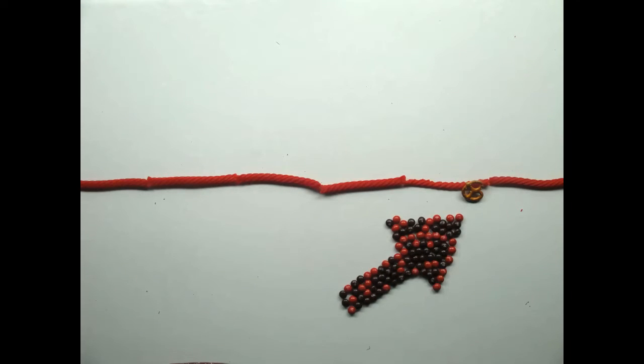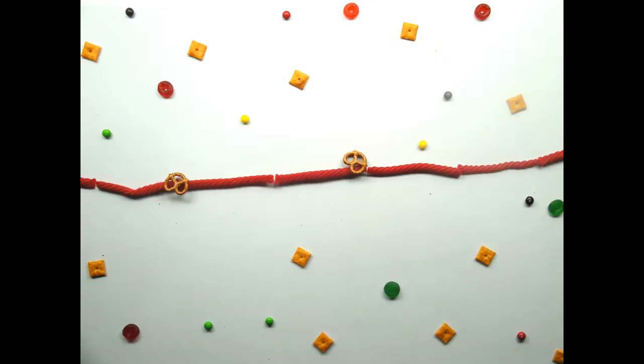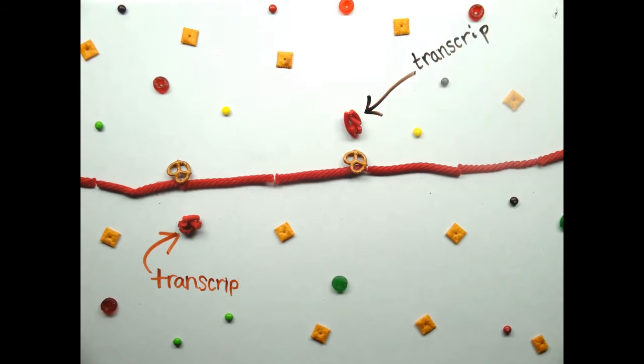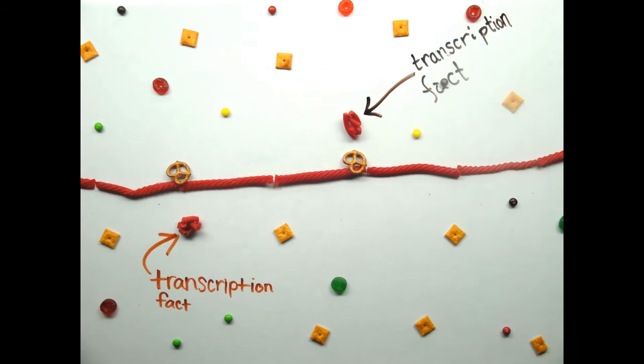There are two possible ways that methylation inhibits transcription. The methyl group on the DNA may keep transcription factors from binding and initiating transcription.